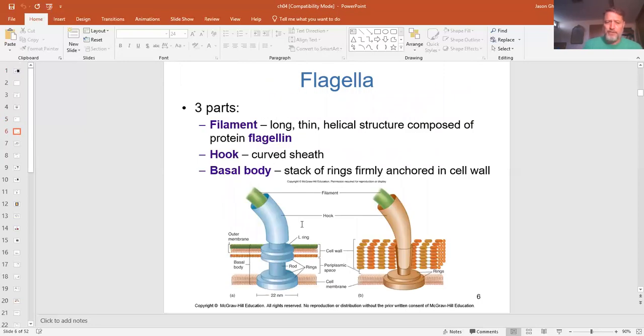So let's start with the flagella. Three main parts are the filament, the hook, and then the basal body. Depending upon the type of bacteria it is, this structure will determine the type of basal body it has.